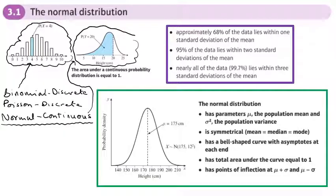For example, the height of all 40-year-old women might be distributed normally. So most women are going to be of a certain height. As you go towards the lower heights and taller heights, you're going to have less of them. You'll see this shape a lot — you'll be drawing loads of these. It's got lots of features. First of all, it's symmetrical, and you'll see that where the mean, the median, and the mode are all in the center. Normally we're talking about the mean. It's a symmetrical distribution.